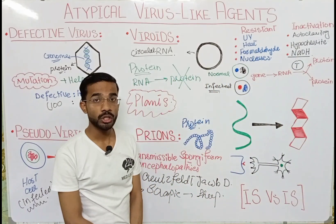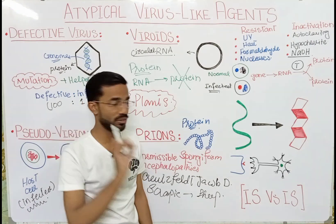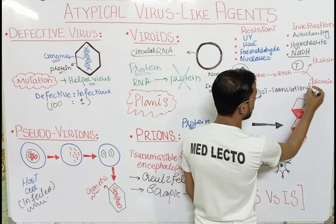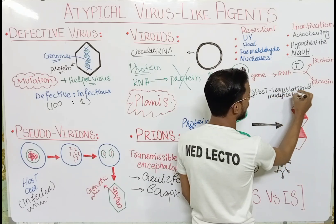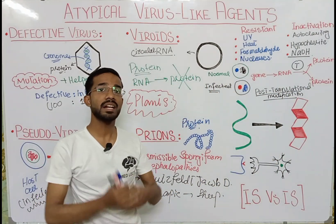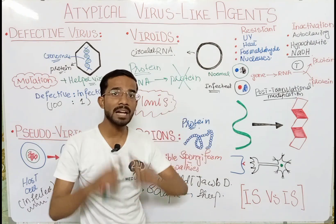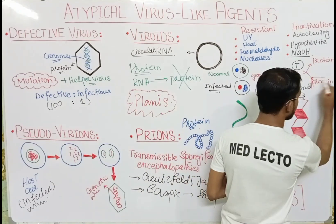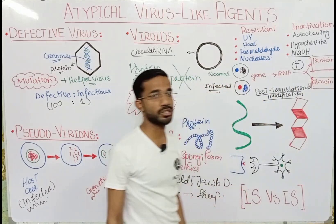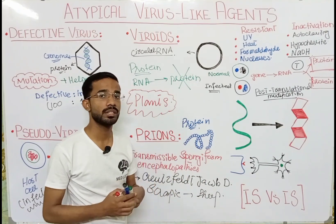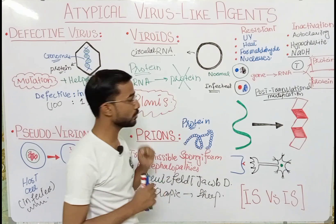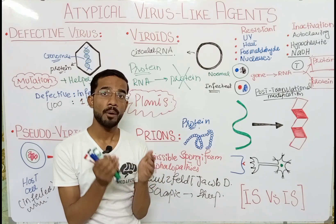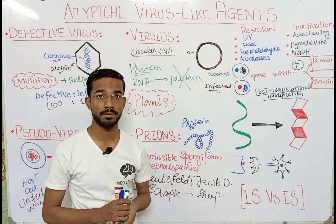After the translation process you will see post-translational modification. This is very important — after the formation of the protein there are some changes that happen in the protein, and that will distinguish the normal protein from prions. These two important things actually happen after the translation process. Prions are basically the normal protein; they are actually produced normally and they perform different functions. They are actually non-pathogenic.